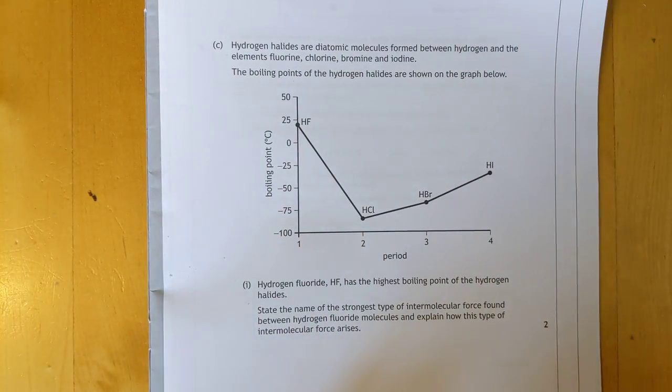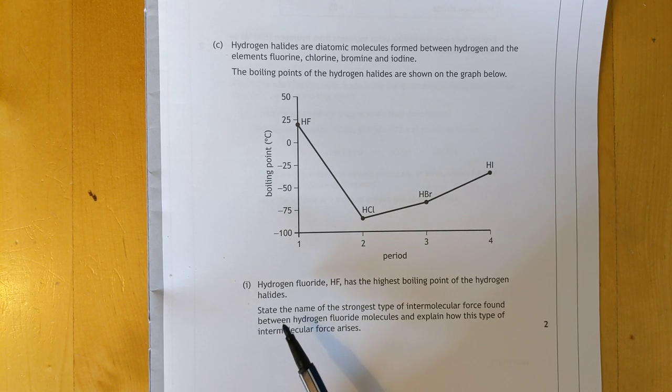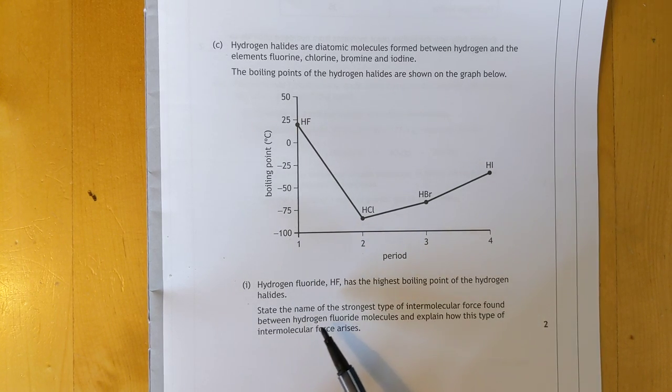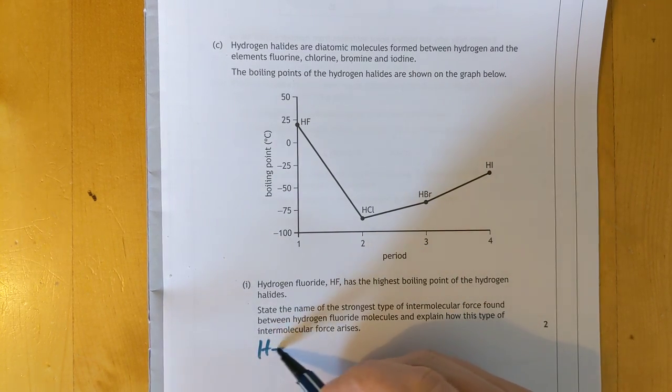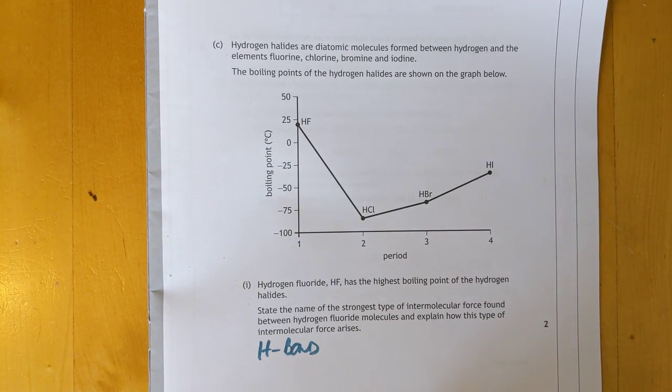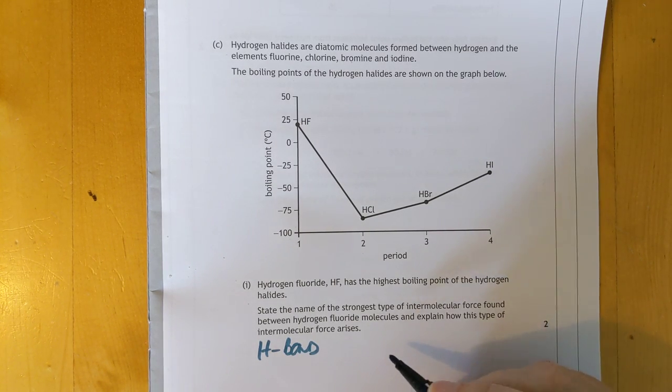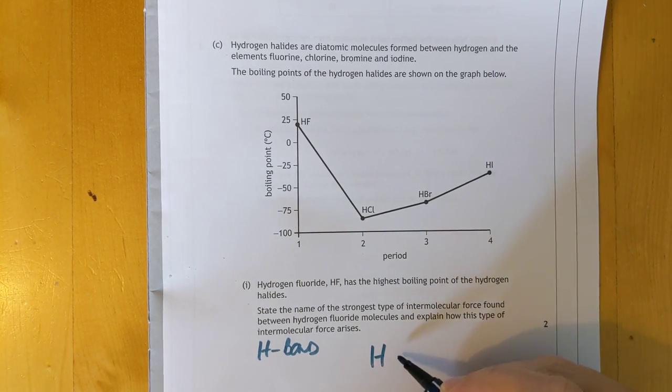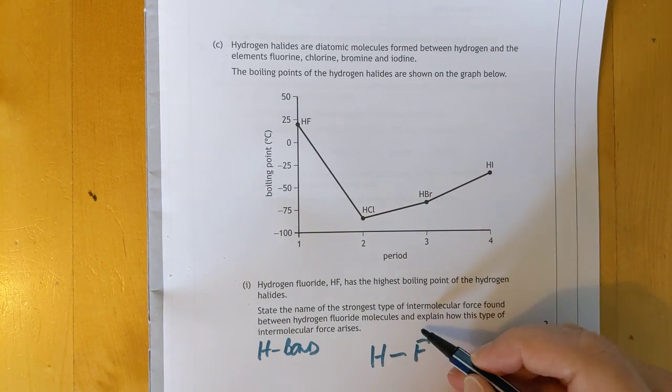Why the ionisation energy of the group seven elements decreases going down the group? Simple answer to that. Two options. I'd probably accept either the outer electrons are further away, or there are more layers of shielding. I don't think you need to have both of them, because it's only one mark. More shielding layers of electrons between the outer and the nucleus.